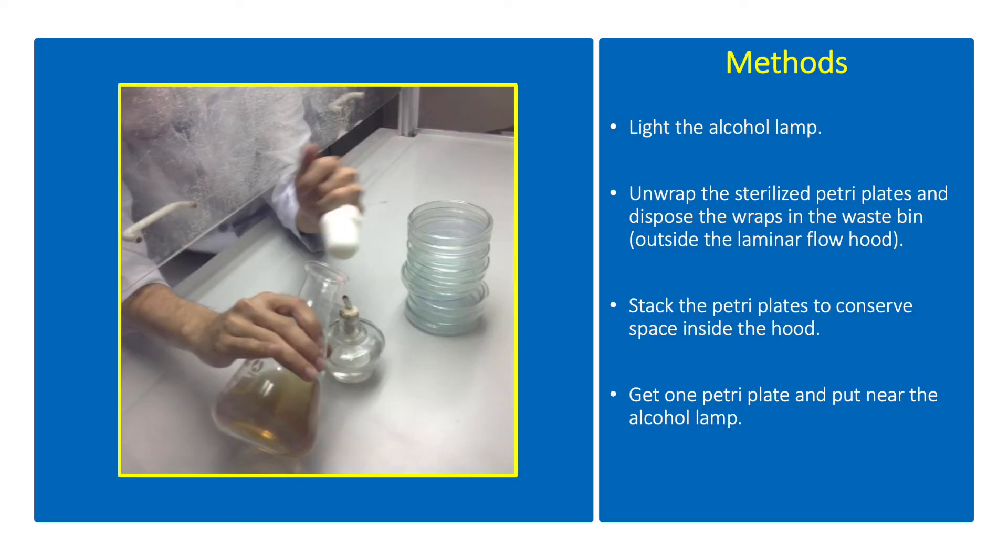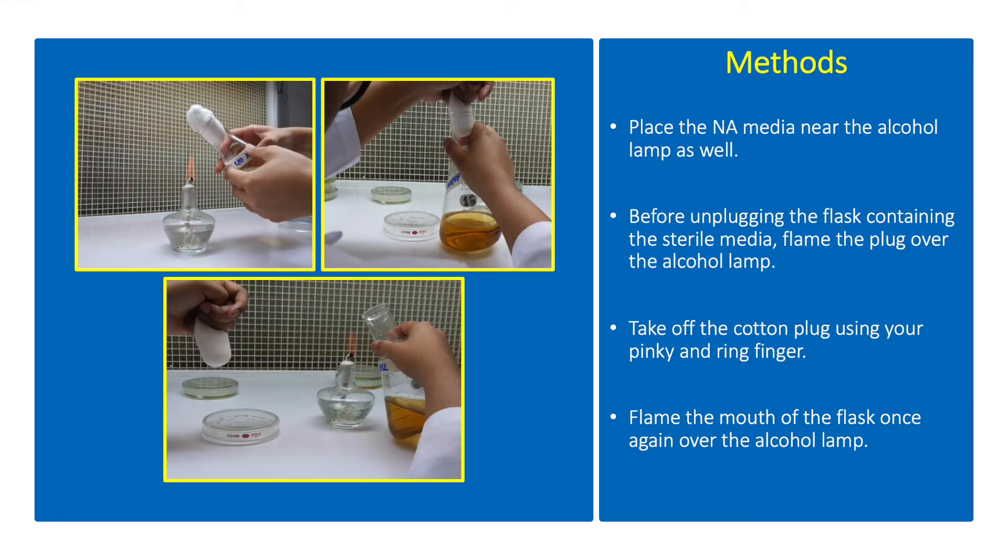Light the alcohol lamp. Unwrap the sterilized petri plates and dispose the wraps in the waste bin. Stack the petri plates to conserve space inside the hood. Get one petri plate and put it near the alcohol lamp. Place the NA media near the alcohol lamp as well.